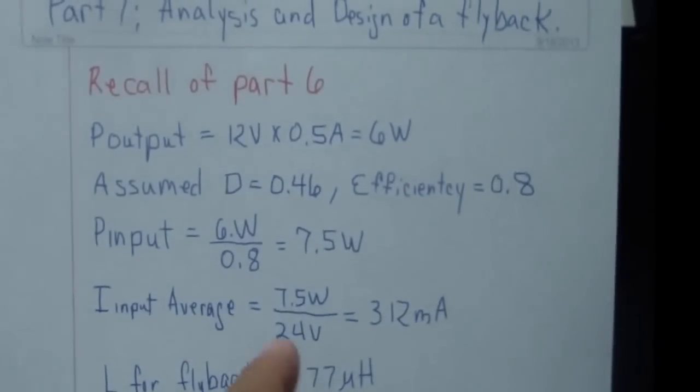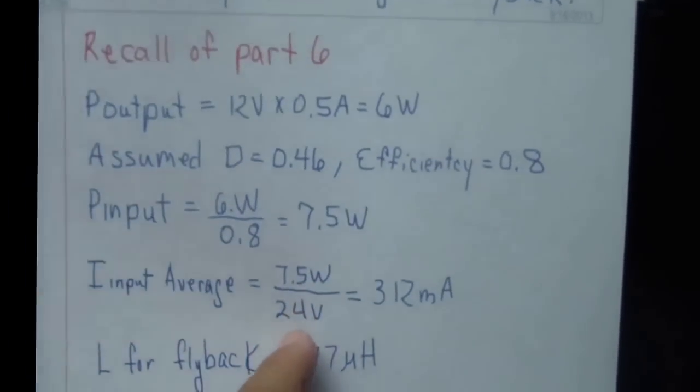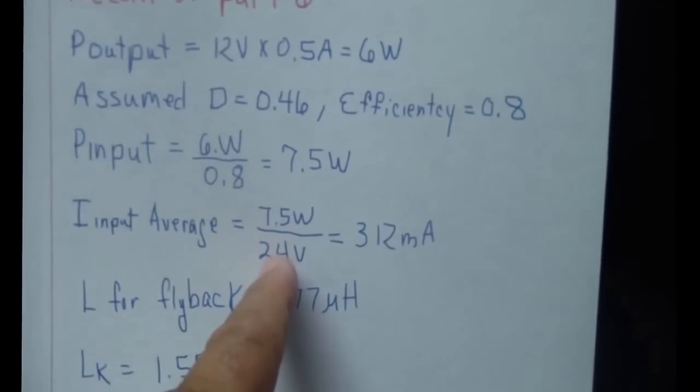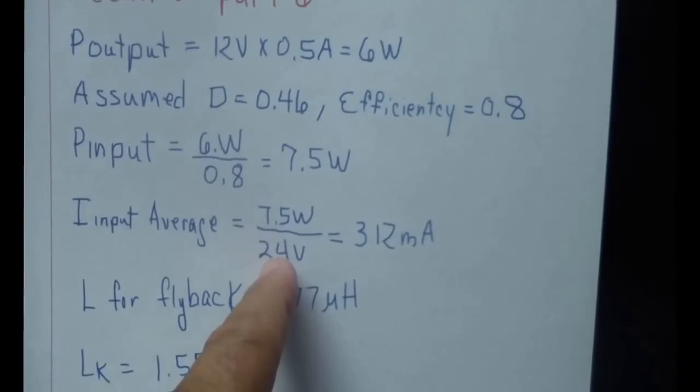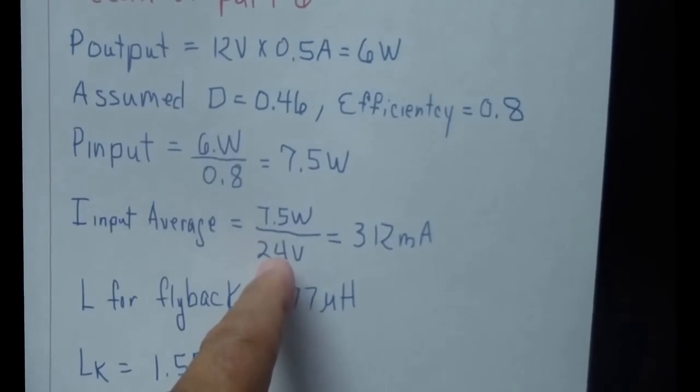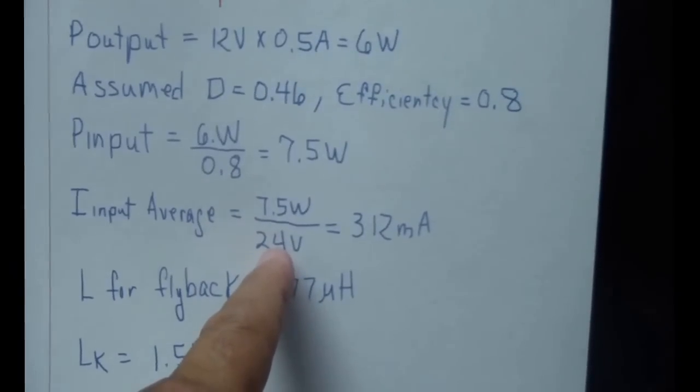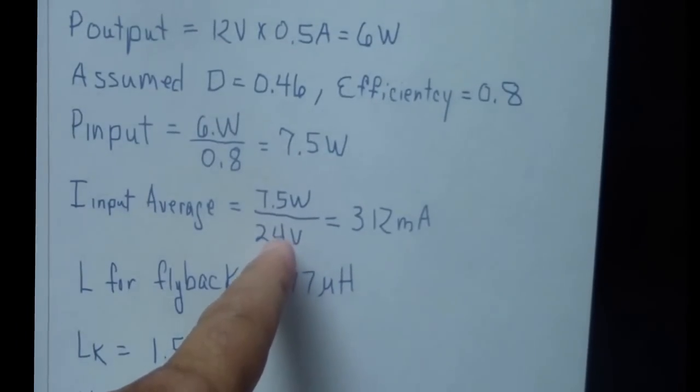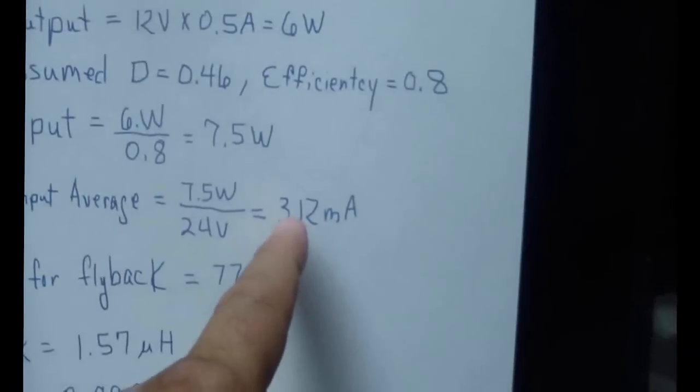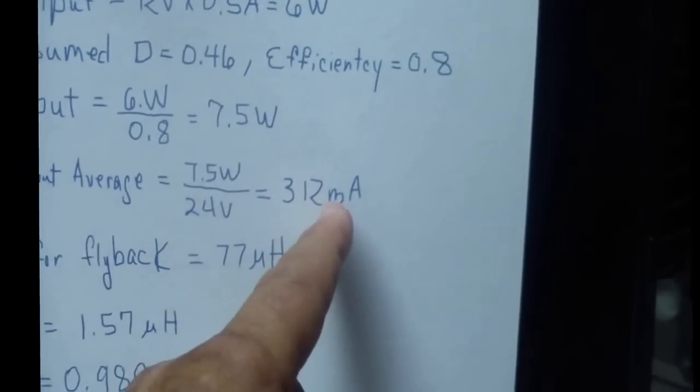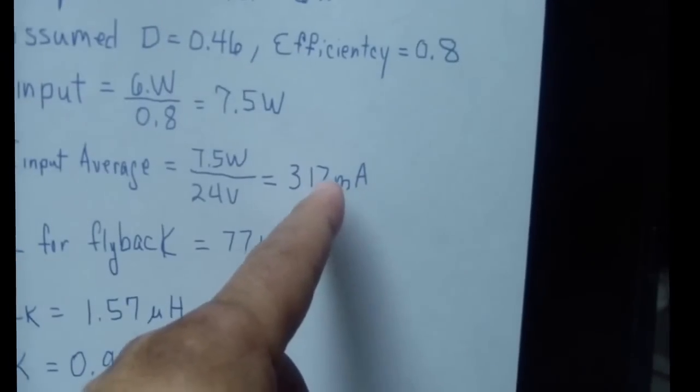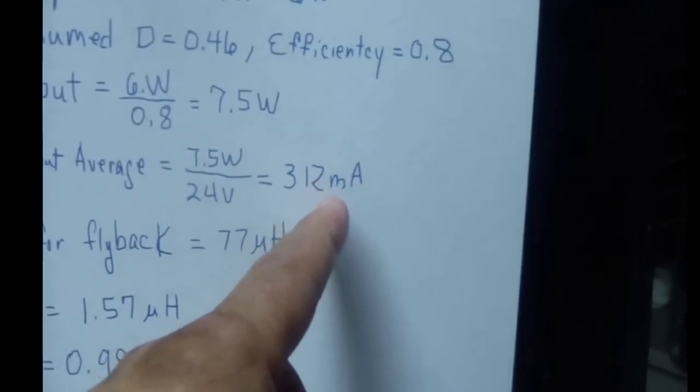Once you have that, you can go ahead and divide the input power by your minimum voltage. The minimum voltage that I designed the flyback for is 24 volts, so I ended up with 312 milliamps.